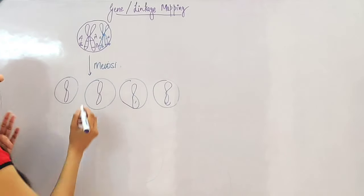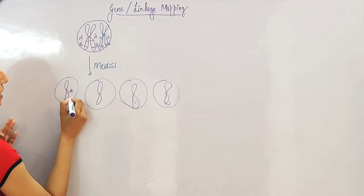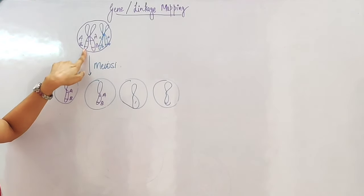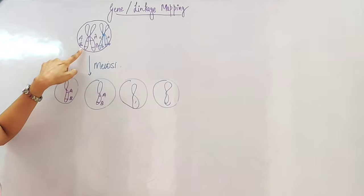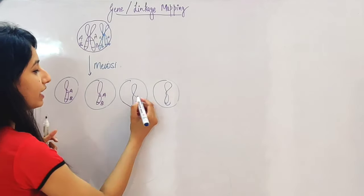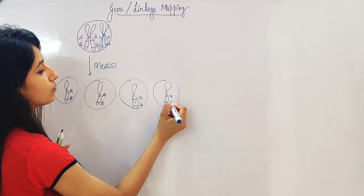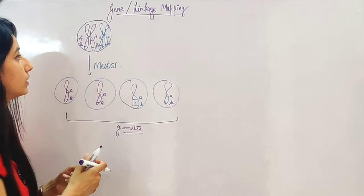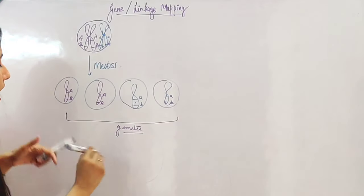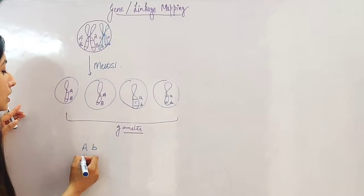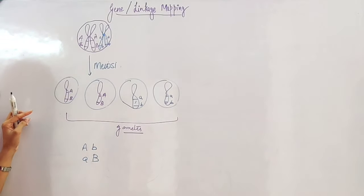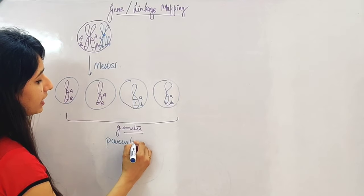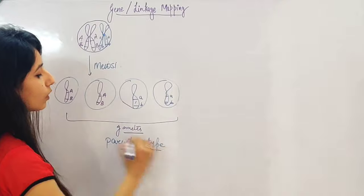In the gametes, if the same condition exists as the parents — capital A capital B, or small a small b — we call these parental type gametes. There is no change from the parents, so this is parental type.